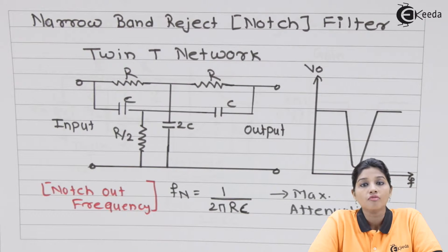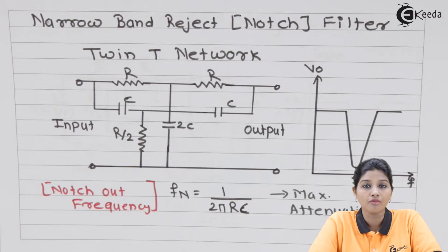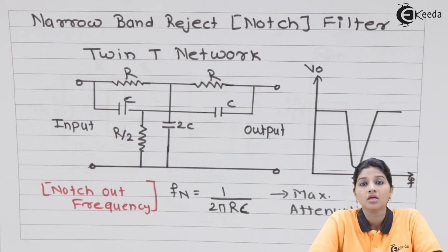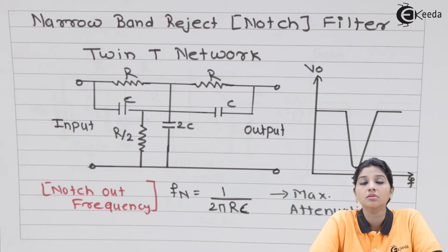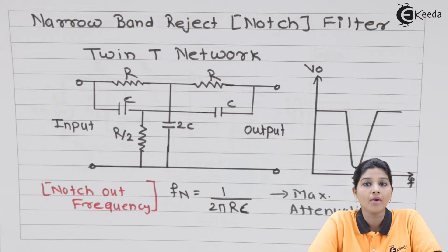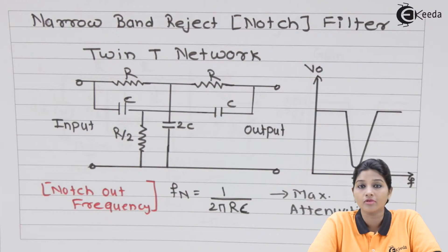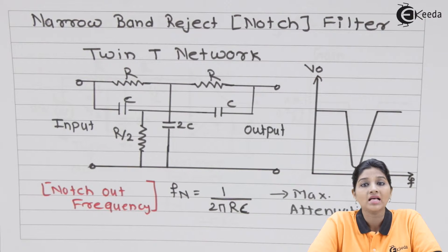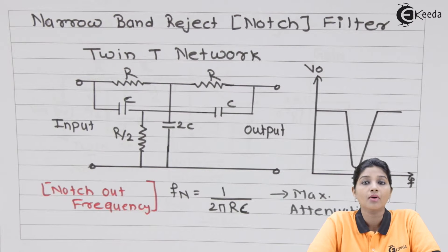In case of band reject filter, based on the value of Q — that means the quality factor — the band reject filter is classified into two types. If the value of Q is higher than 10, then the type of filter is narrow band reject filter. As the value of Q increases, the bandwidth of the filter is reduced. The relationship is Q equals FC divided by bandwidth, so higher Q provides less bandwidth.